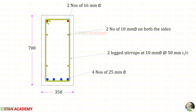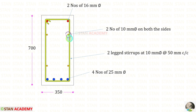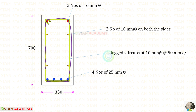Here you can see the reinforcement details. We have provided 4 numbers of 25 millimeter diameter bars in the tension zone and 2 numbers of 16 millimeter diameter bars in the compression zone. Two numbers of 10 millimeter diameter bars are provided on both sides for torsion, and 2-legged 10 millimeter diameter stirrups at 50 millimeter spacing are provided. Thank you for watching this video.